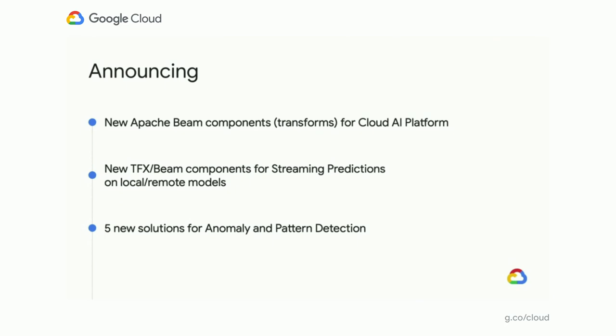The solution is available on our website under the real-time AI section — feel free to discover and customize. In addition to the two existing solutions I just covered, today we're announcing new components and new solutions. We created new Apache Beam components — we call them transforms — that integrate Dataflow better with Cloud AI Platform. These components are for video analysis, image analysis, text analysis, DLP, and many other areas. We also created a TFX component that can be embedded into Beam pipelines for streaming predictions on either locally loaded or remote models, with the same API throughout.